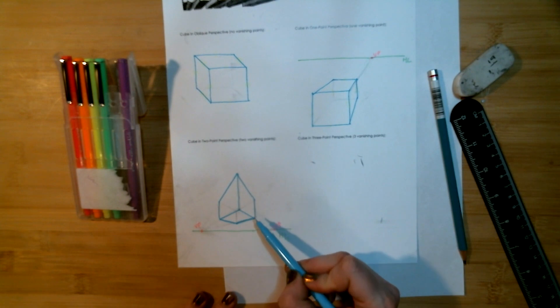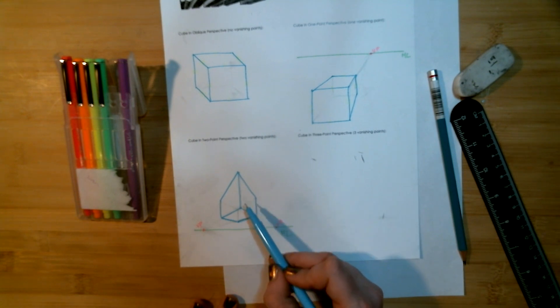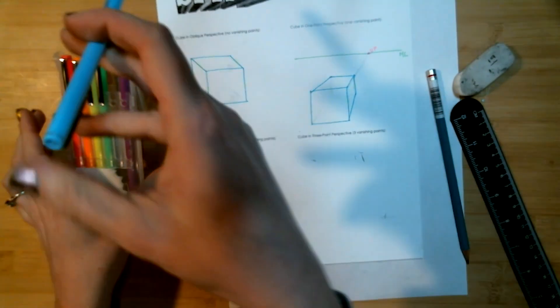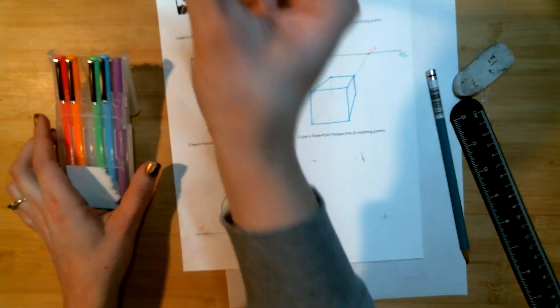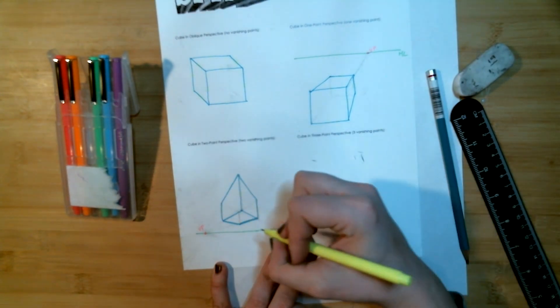And you can see that that perspective while a little bit exaggerated is seen right here as if you are looking at a box down from below and now we only have one series of parallel lines left and that's only our vertical lines.